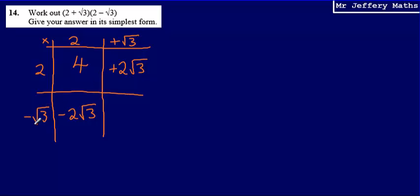Now when I multiply roots together, I can say it will be the product of the two. So negative root 3 multiplied by positive root 3 would be negative root 9.